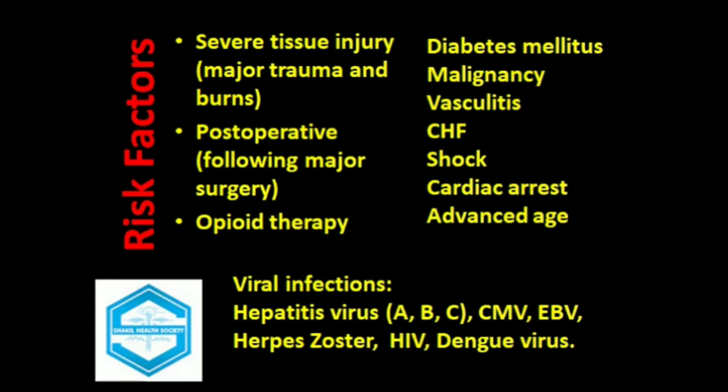The risk factors for acalculous cholecystitis are many. First of all, severe tissue injury, which may be due to burns or major trauma. In post-operative patients, especially after major surgeries, patients who are taking opioid therapy, and patients suffering from diabetes, malignancy, or vasculitis are also at risk.